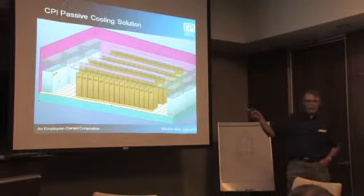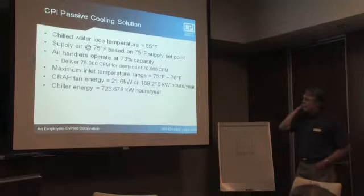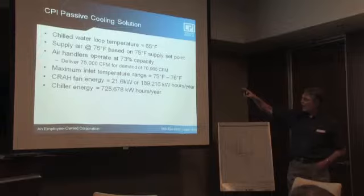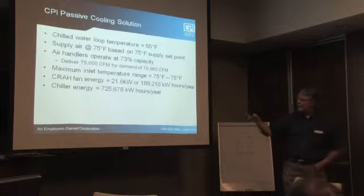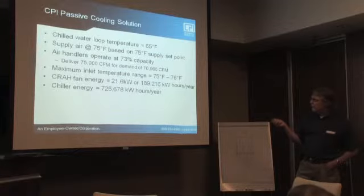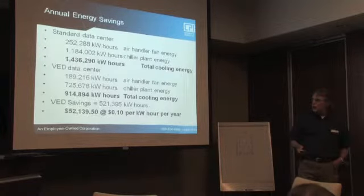Comparing that to a VED data center: we raised the chilled water loop temperature to 65 degrees, moved the set point from return to supply and raised it to 75 degrees. Air handler capacity dropped to 73 percent — only 75,000 CFM needed to meet the server demand of 71,000 CFM. Server inlet temperatures range from 75 to 76 degrees. Fan energy is down to 189,000 kWh and chiller plant energy is 725,000 kWh.